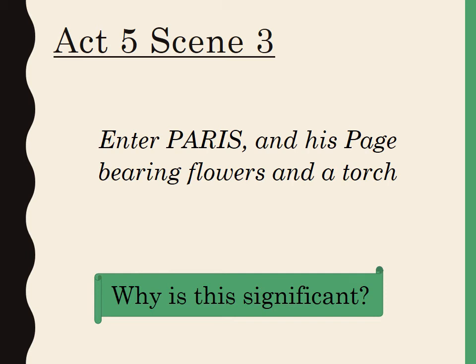It could be said he brought the flowers just to enhance his reputation, almost for show. But in actual fact there's no one around to impress — he's there with his page, who is of lower class and most likely younger. So he didn't need to bring flowers for his benefit, which leaves us with the idea that Paris brought them to show his genuine love. I also want to zoom in on the word 'torch,' which recalls Act 1, Scene 5, when Romeo says 'she doth teach the torches to burn bright,' suggesting Paris's love may have matched Romeo's.